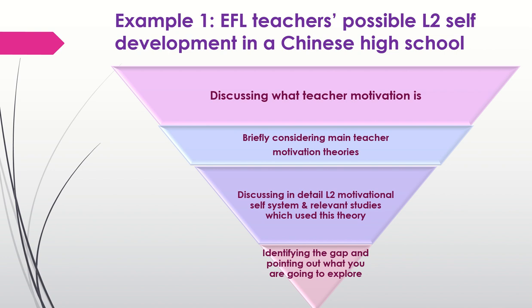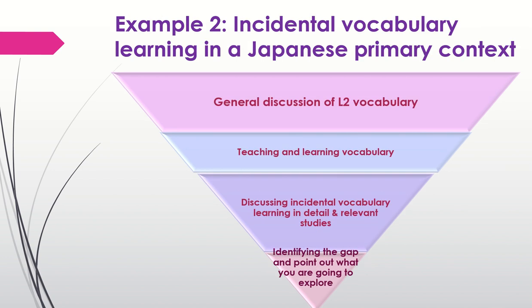Now let's have a look at another example. In some studies, you are not using a specific theory, but you still need to discuss the relevant literature. Let's imagine that the purpose of your study is to examine the impact of incidental vocabulary learning in a Japanese primary school. You will probably start your literature review with a general discussion of L2 vocabulary, which will probably be followed by a discussion of teaching and learning vocabulary — or just one of these, depending on what the specific focus of your study is.